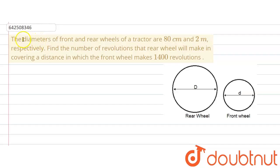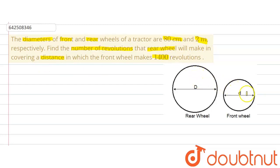The given question says that the diameters of front and rear wheels of a tractor are 80 centimeters and 2 meters. So the front wheel has a diameter of 80 cm and the rear wheel has a diameter of 2 meters. We need to find the number of revolutions the rear wheel will make in covering a distance in which the front wheel makes 1400 revolutions. If the front wheel makes 1400 revolutions to cover a distance, how many revolutions will the rear wheel take to cover the same distance? This is what the question is asking — the distance is the same.